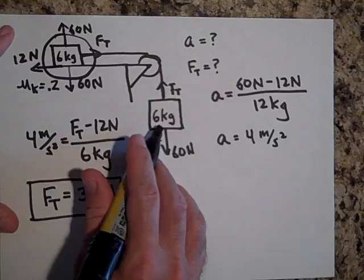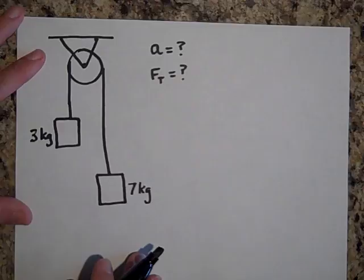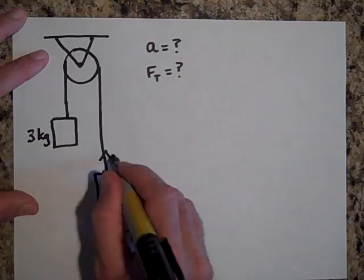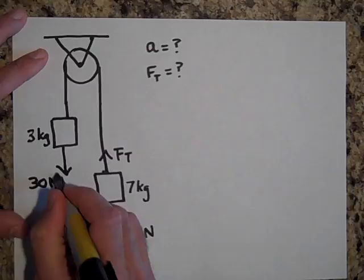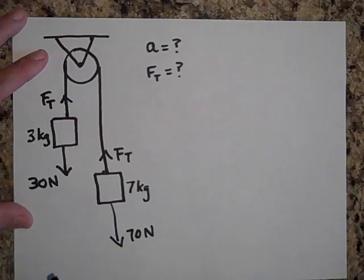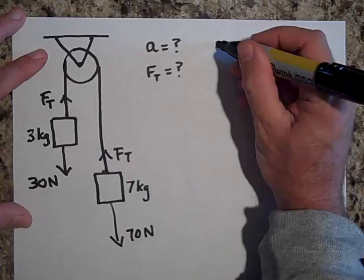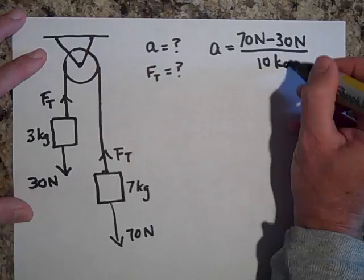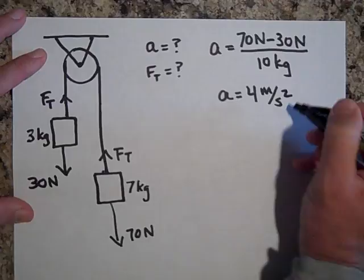How about this: two masses hanging — 7 kilograms and 3 kilograms — connected by a wire over a pulley. Can you give me the acceleration and the tension in the wire? Go ahead and pause. We're back. We have 70 newtons downward on one side and 30 newtons downward on the other, with tension forces that cancel when looking at the whole system. So a = (70 N − 30 N) / 10 kg = 4 meters per second squared.